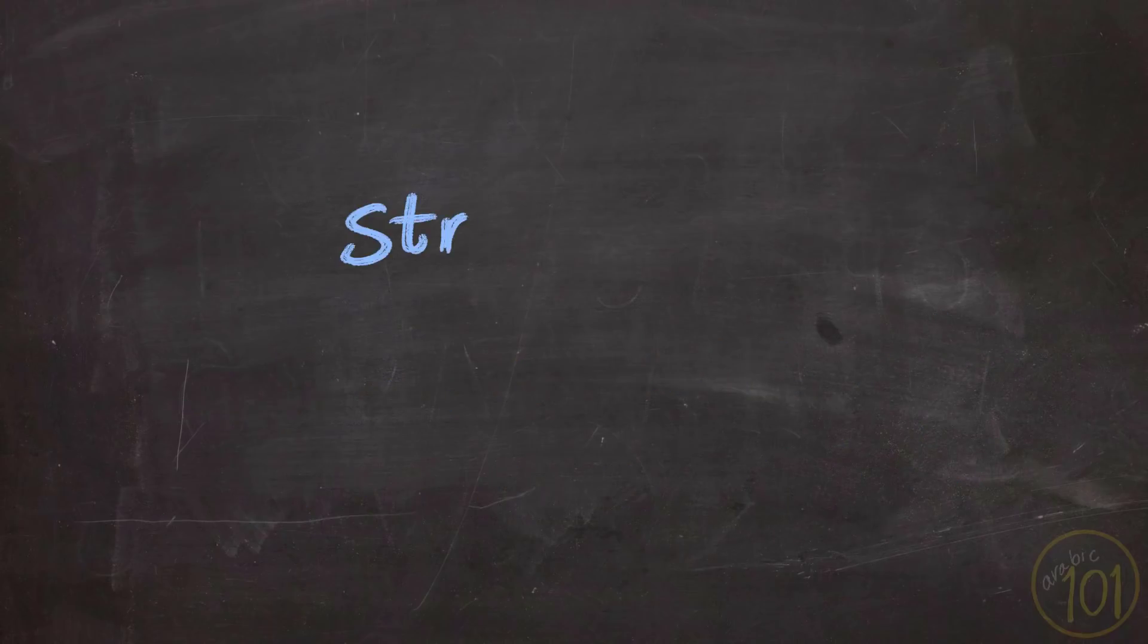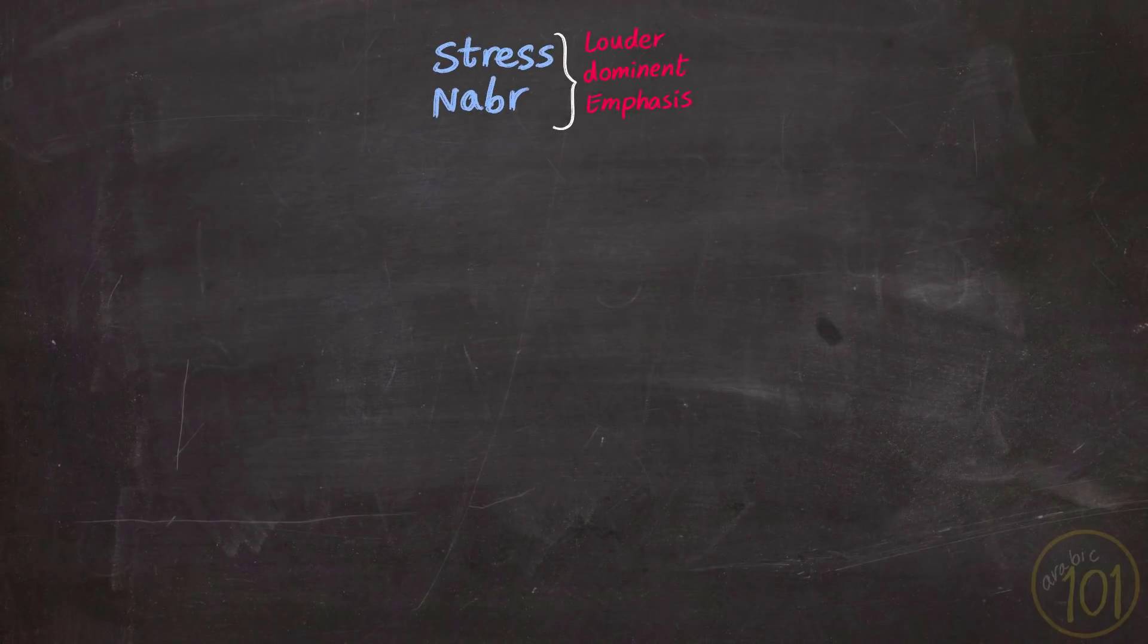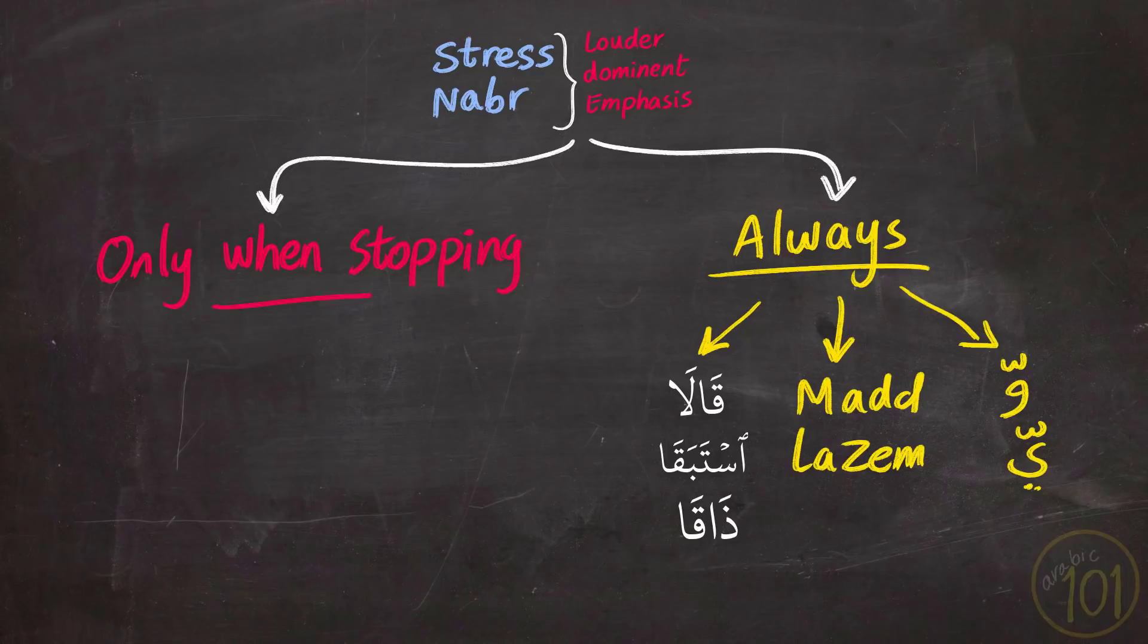So in a nutshell, stress or نَبْر means you will say a part of the word louder, clearer, with more emphasis on it so that the word is properly pronounced. You always apply نَبْر on the part of the word that has يَا or وَا with شَدَّ, or when performing مَدْ لَازِمْ on the letter with شَدَّ, and on the last part of the word قَالَ استَبَقَ and ذَاقَ in case of التقاء السَّاكِنَيْنَ. And you apply it only when stopping at the word that ends with حَمْزَ after أمَدْ and with words ending with شَدَّ.